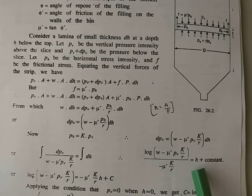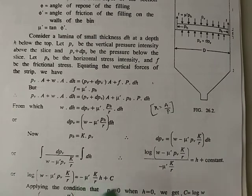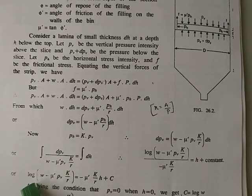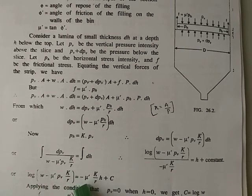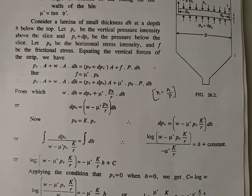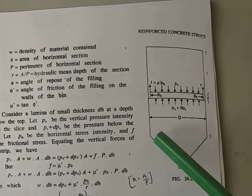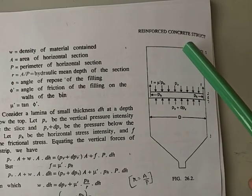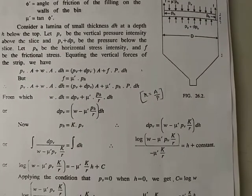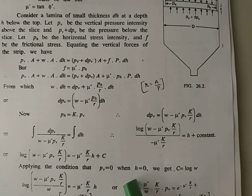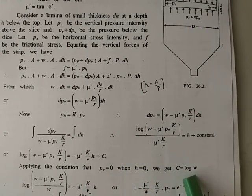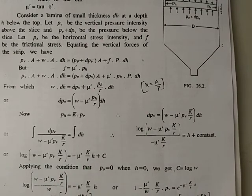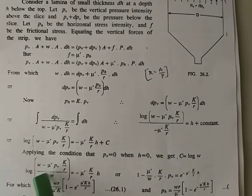Transferring terms, the equation reduces to: log(w − μ' k pv / R) = (μ' k / R) h + C. Using the boundary condition that pv = 0 at h = 0, we find C = log w. Substituting back and simplifying, the equation reduces to a solvable form.